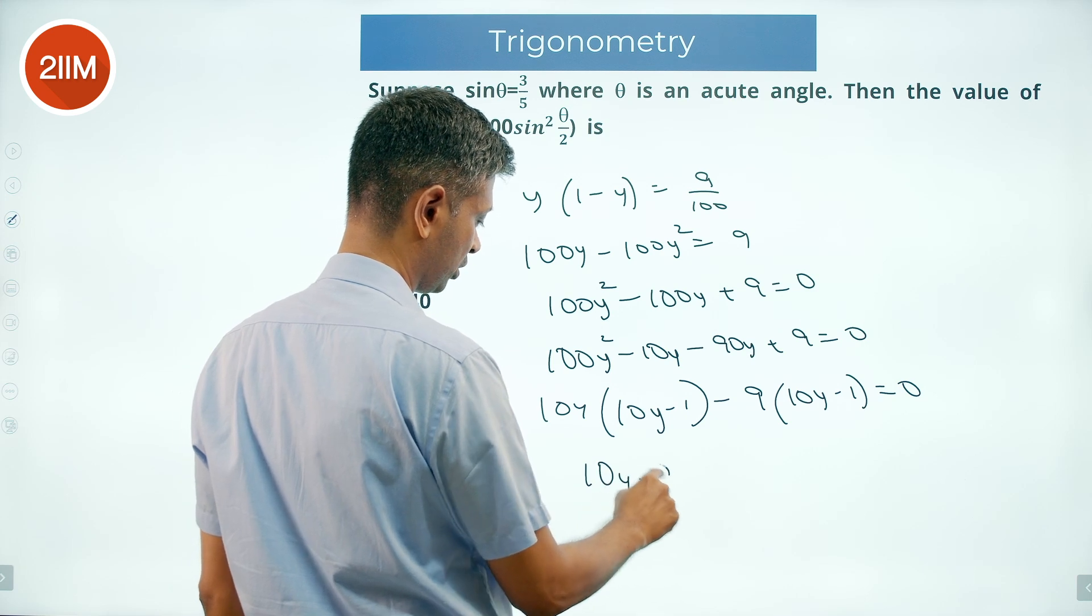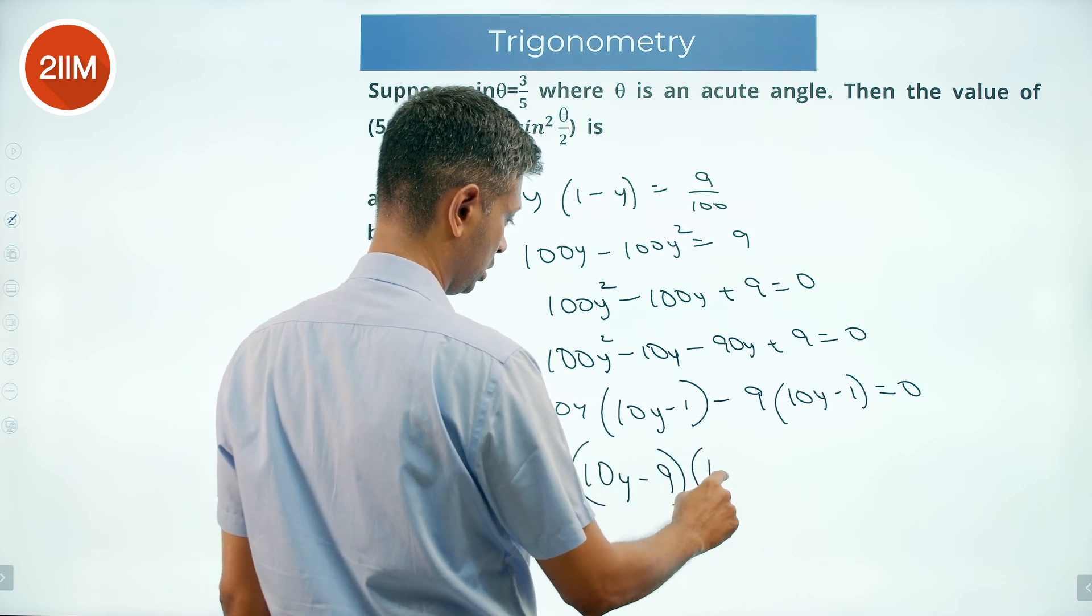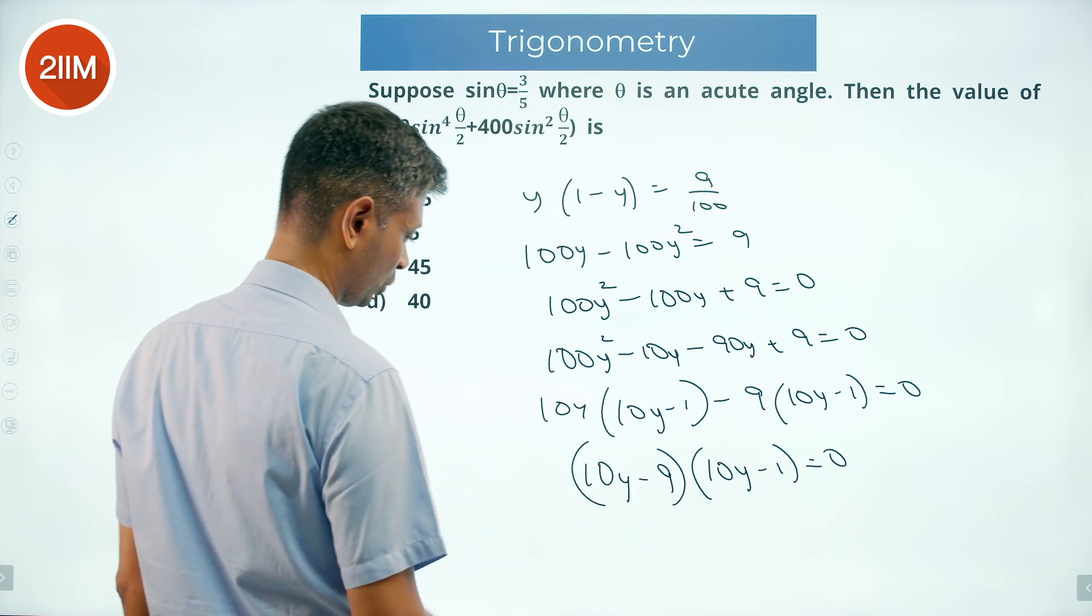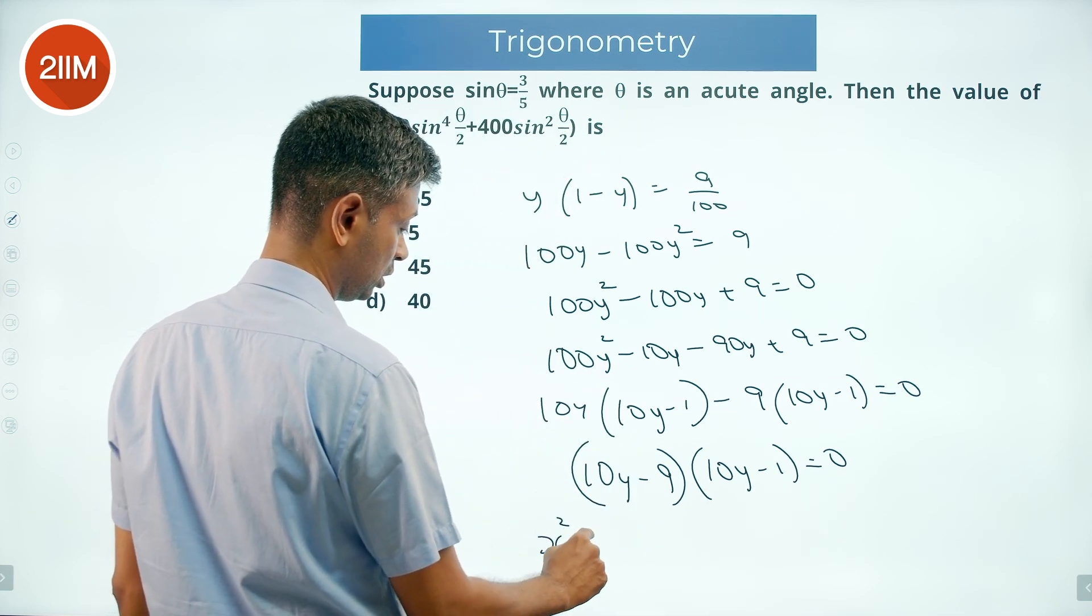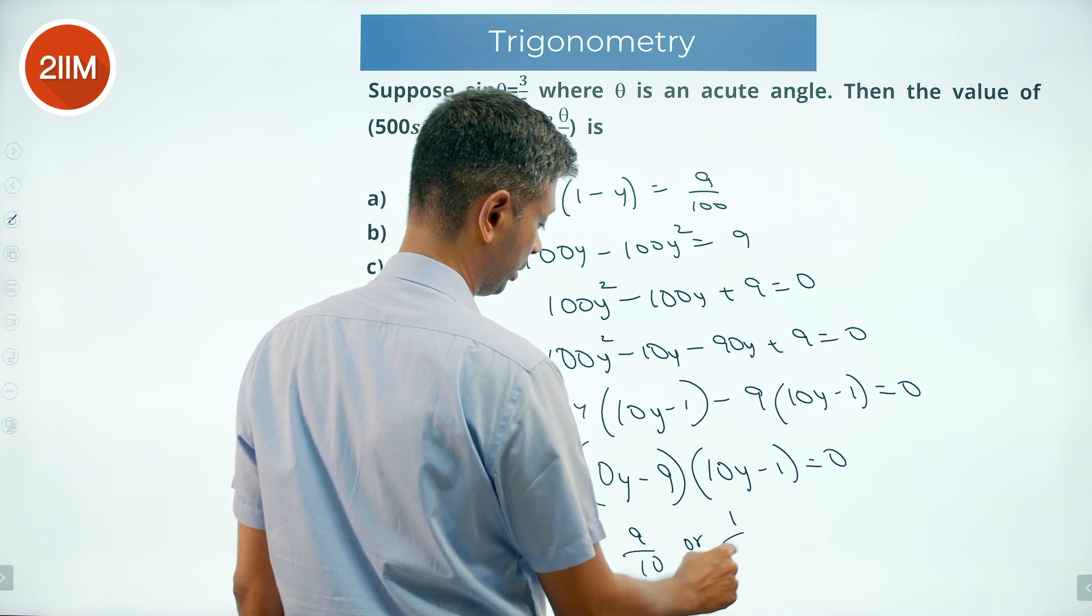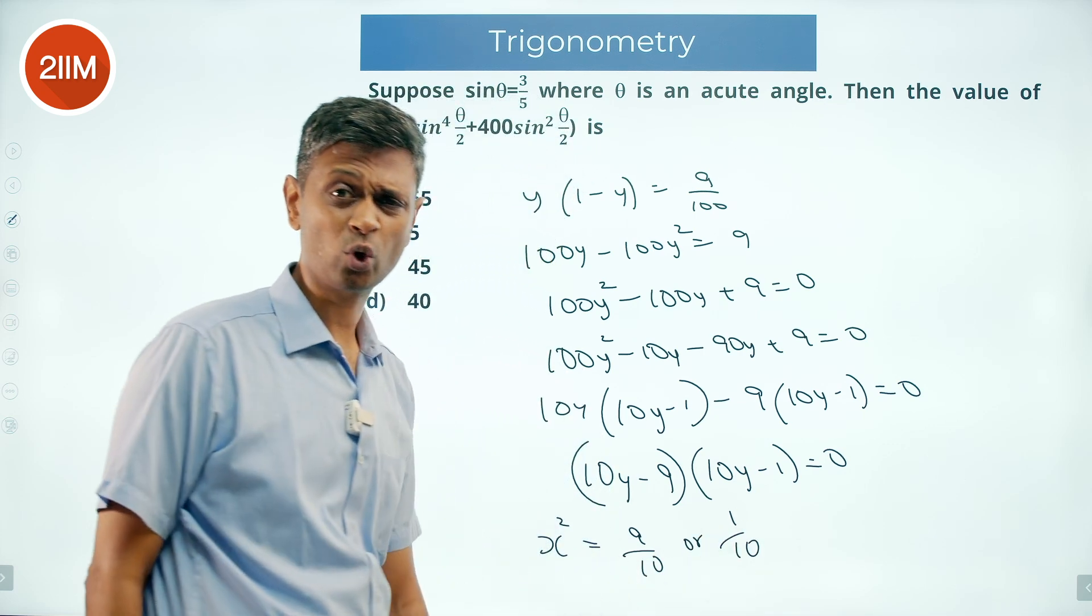10y minus 9 into 10y minus 1 equal to 0. So x square is either 9 by 10 or 1 by 10. X square is sine square theta by 2.